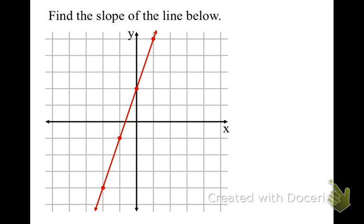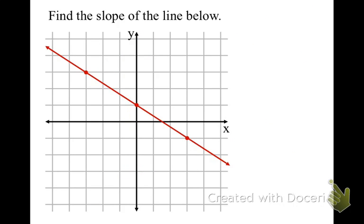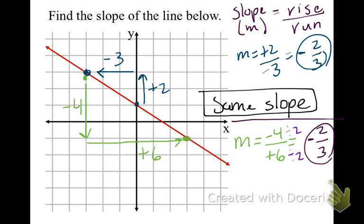On your own, find the slope of the line below. If you're solving on your own, you should have gotten 3 as your answer — whether going in the positive or negative direction, you'll still get the same answer, which is 3. Now on your own, find the slope of this line. You should have gotten negative two-thirds. It doesn't matter which direction you go — you will always get the same exact slope because all the points are on the same exact line.